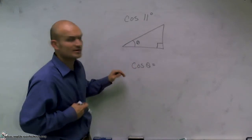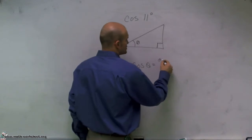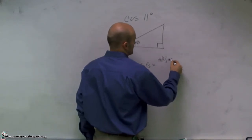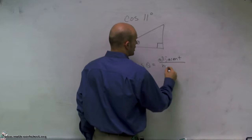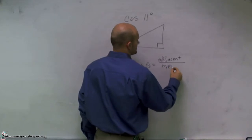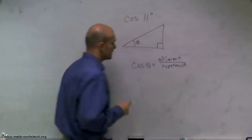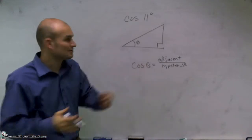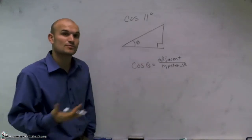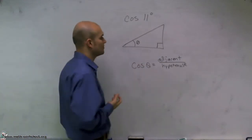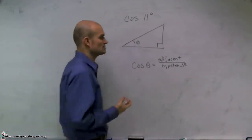The first thing we need to remember is cosine of theta is going to represent our adjacent side all over our hypotenuse. Now, looking on this triangle, we're not really given anything, but we do need to understand at least where those two parts are to help us understand where we're getting the cosine function.